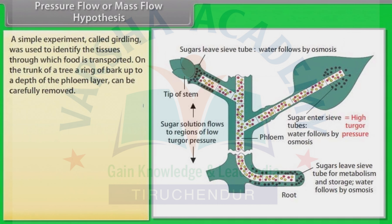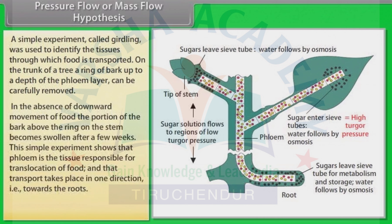A simple experiment called girdling was carried out to identify the tissues through which food is transported. On the trunk of a tree, a ring of bark up to a depth of the phloem layer can be carefully removed. In the absence of downward movement of food, the portion of the bark above the ring on the stem becomes swollen after a few weeks. This simple experiment shows that phloem is the tissue responsible for translocation of food, and that transport takes place in one direction, which means towards the roots.